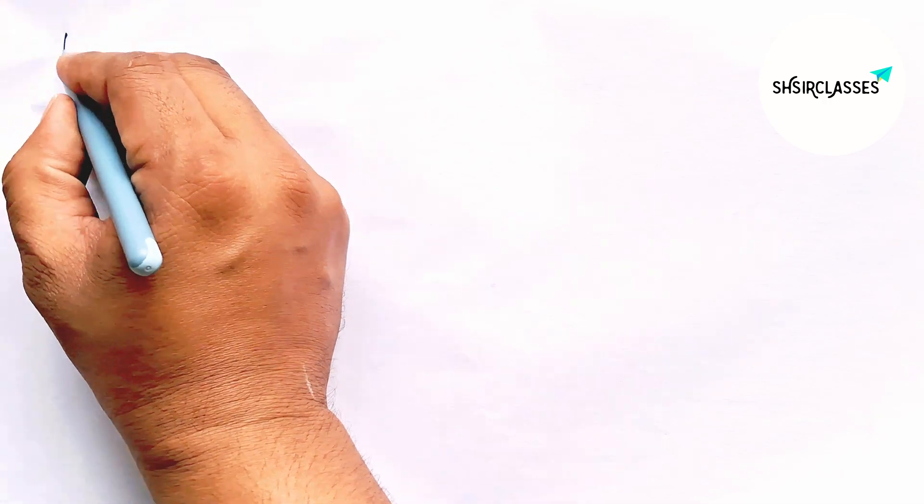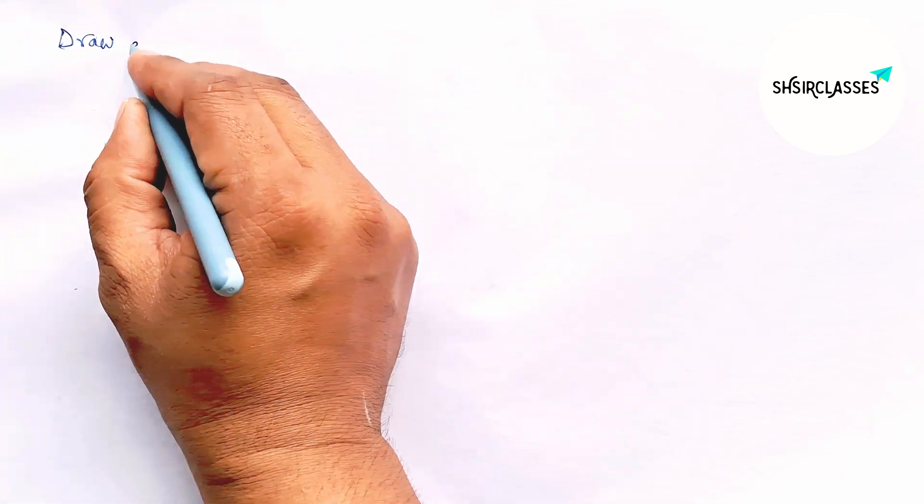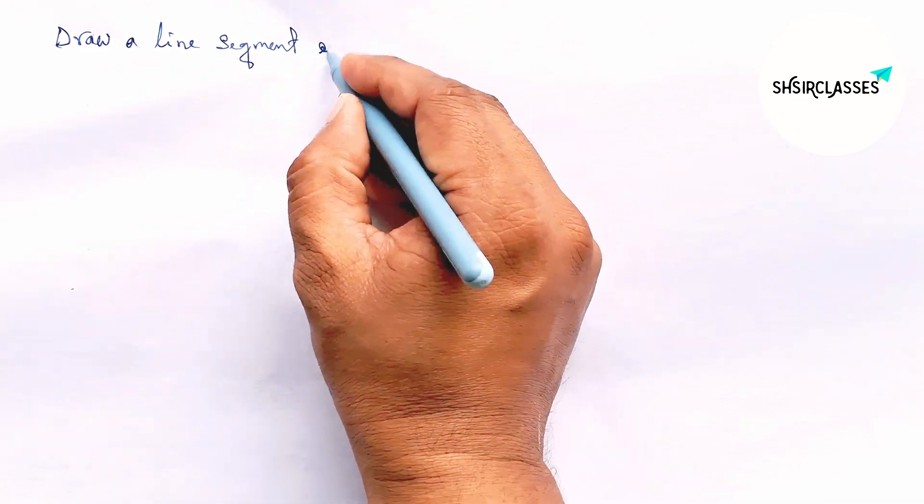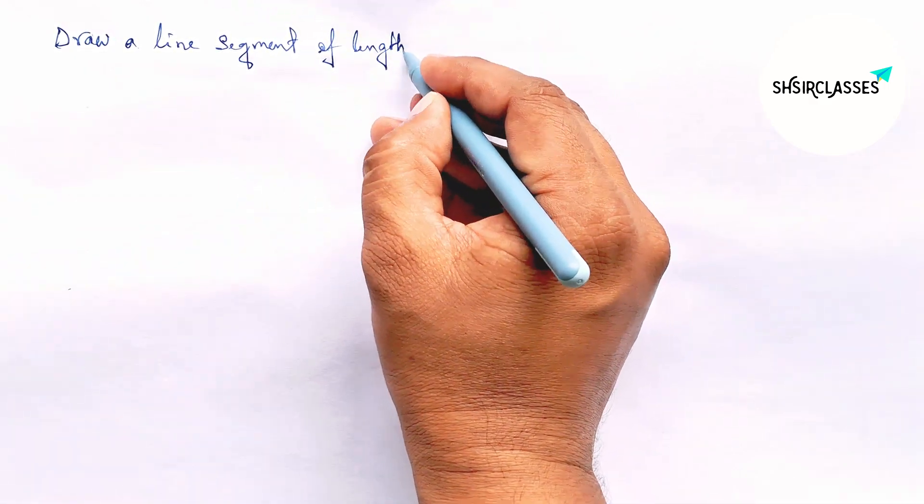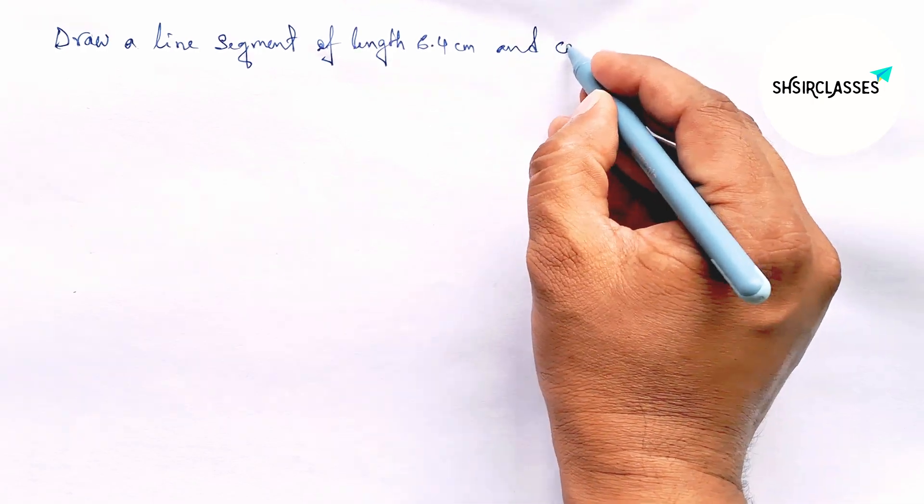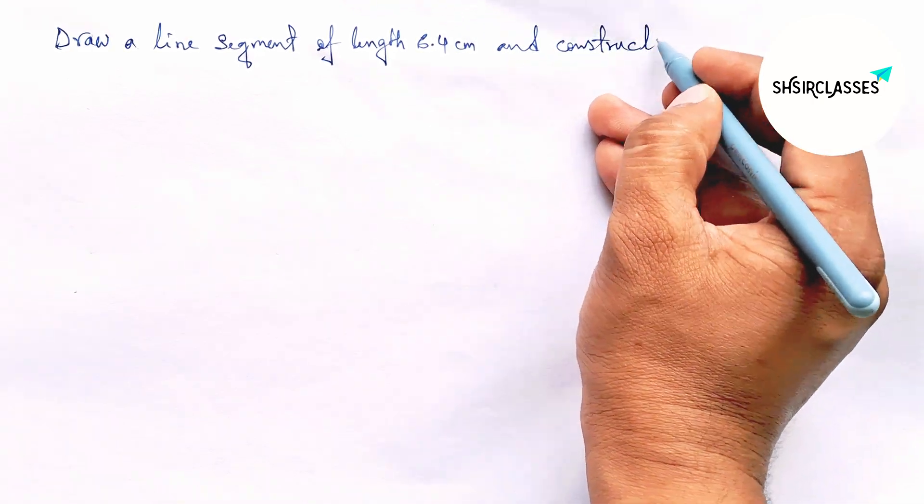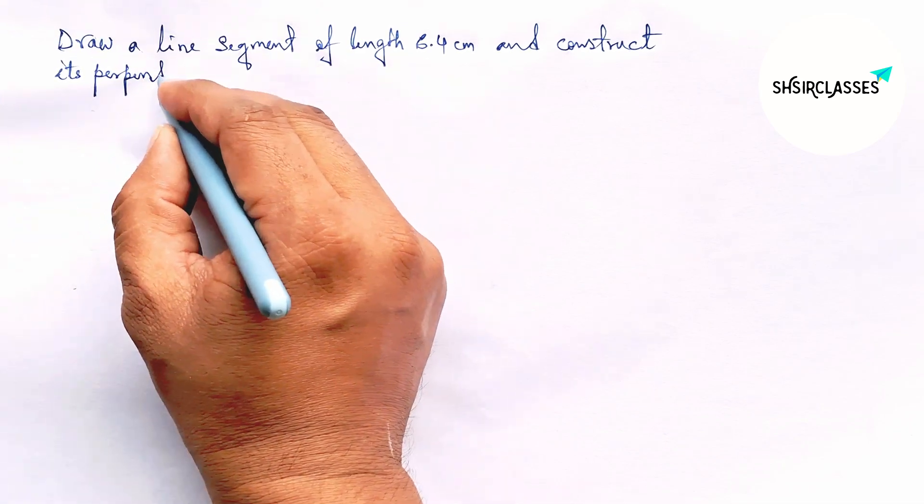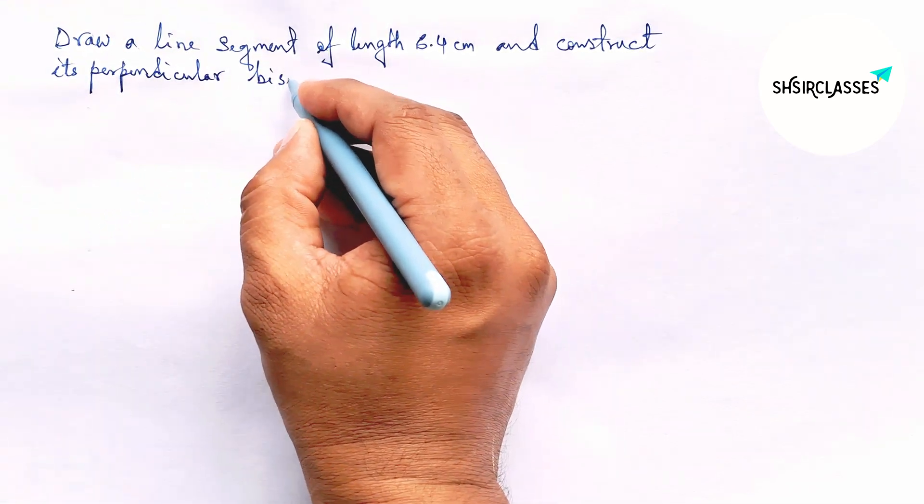Hi everyone, welcome to Essay Share Classes. Today in this video, draw a line segment of length 6.4 centimeter and construct its perpendicular bisector to the given line in easy way. So please watch the video till the end.